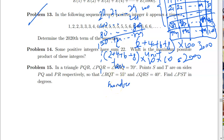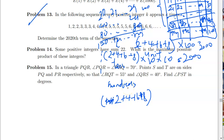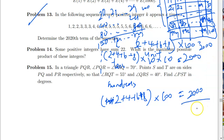For the hundreds digit, 200, 400, 600, and 800 each contribute their even digit across 100 numbers each. So 2 + 4 + 6 + 8 = 20, multiplied by 100, gives 2000 again. Adding the three contributions — 2000 + 2000 + 2000 — the total sum is 6000, which is our answer for problem 12.